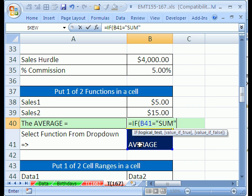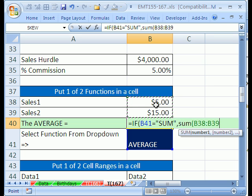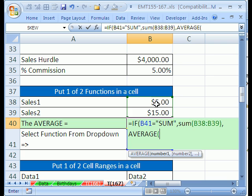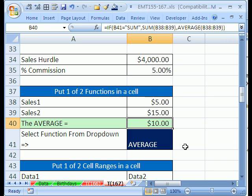If that's the case, then we want to do sum on this range right here. Otherwise, we want to do average on this range right here. So there it is, one of two functions based on a logical test in a cell. Control Enter.